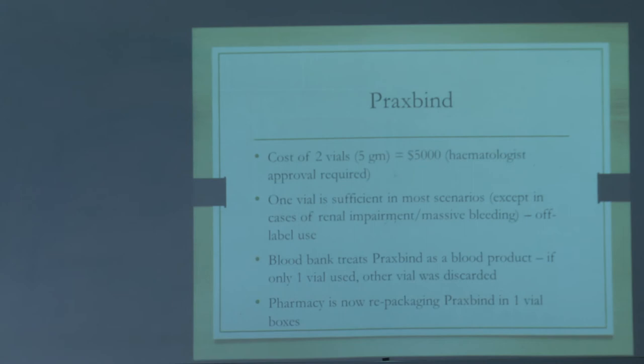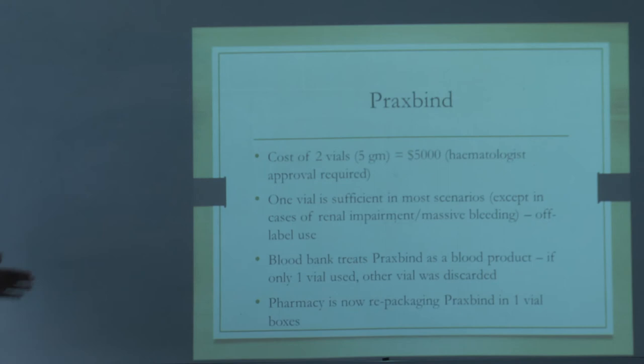Praxbind comes in a box with two vials as mentioned. It is costly — five thousand dollars. We believe one vial is sufficient — as I showed earlier, 2 grams was as effective as 4 grams. We usually say please use only one vial. Previously the blood bank would discard the second vial, but that is no longer happening — the pharmacies are now repackaging it.